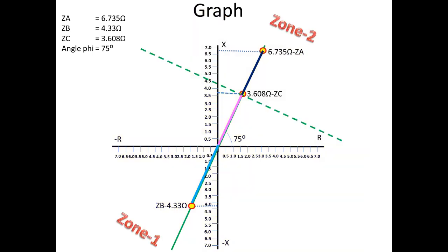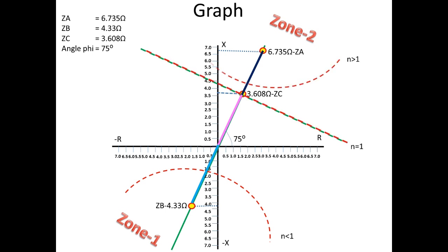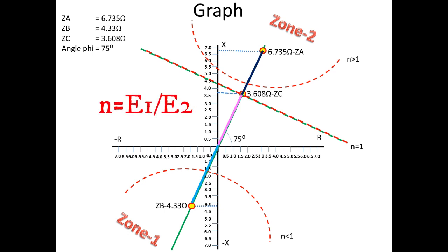In this we have three conditions. One: fault occurs in our area — we say n less than 1. Next: the fault occurring at the other end — n is greater than 1. The third: fault exactly at the center point between Zone 1 and Zone 2 — n equal to 1. Here n equals E1 (our end voltage) over E2 (other end system voltage). Now I am going to test for the n less than 1 condition by taking various random points over this curve and noting the x (R) and y (reactance) values.